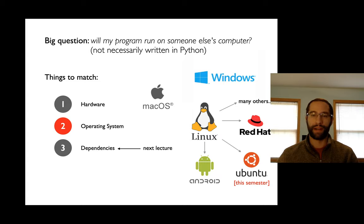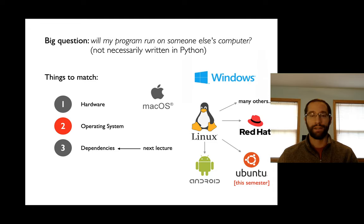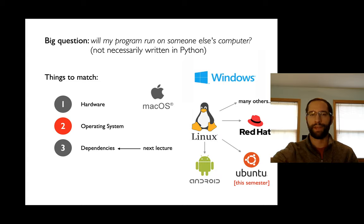Linux is more common than you might think. Most of the things running in the cloud are running on Linux. Linux was kind of the parent of Android. There are lots of different flavors of Linux, maybe Red Hat, Ubuntu. We're actually going to be learning a little bit of Ubuntu Linux this semester — that's one of the key things we're focusing on, and it's a good skill to know another operating system. Worrying about the operating system is going to be central when we think about reproducibility.